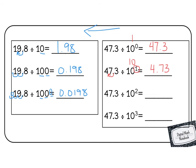Now we have 10 to the power of 2. That means we're going to move 2 places, so 1, 2. So our number is now going to be 0.473. So we're going smaller each time we divide.